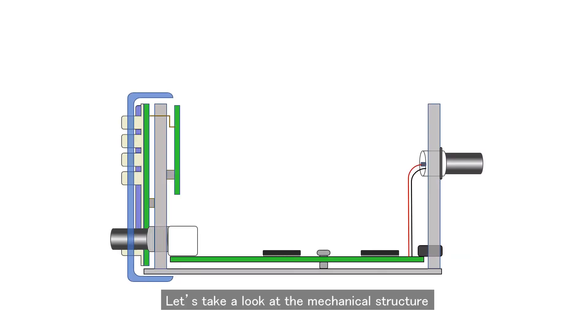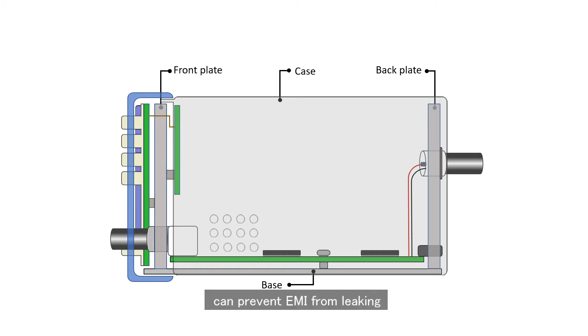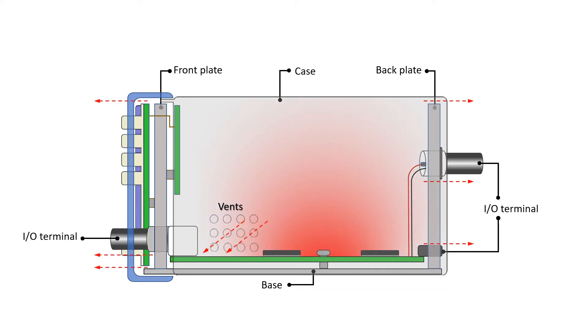Let's take a look at the mechanical structure. Metal base, front plate, back plate, and the case can prevent EMI from leaking. But the necessities like vents and I/O terminals will leave some gaps and cause the leakage of EMI. What's more, the bottom circuit and LCD set on the outside of the front panel will also cause the leakage of the interior EMI.